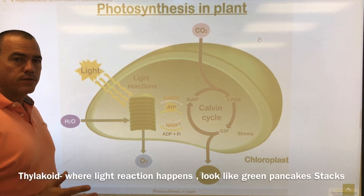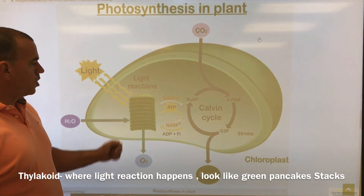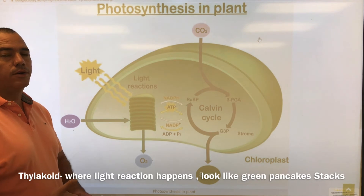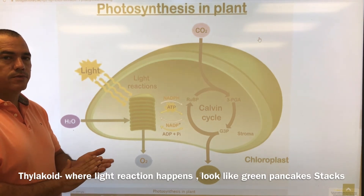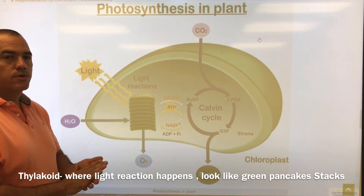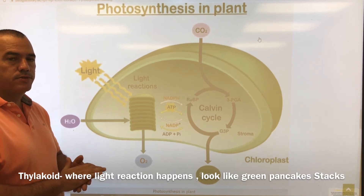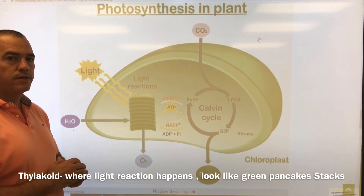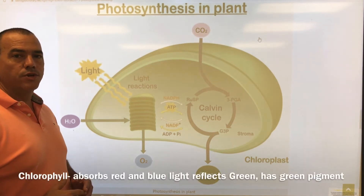The next word is thylakoids. Thylakoids are those green pancake stack-looking things inside the chloroplast. Write this down: thylakoids look like green pancake stacks, and they are where the light-dependent reaction happens.